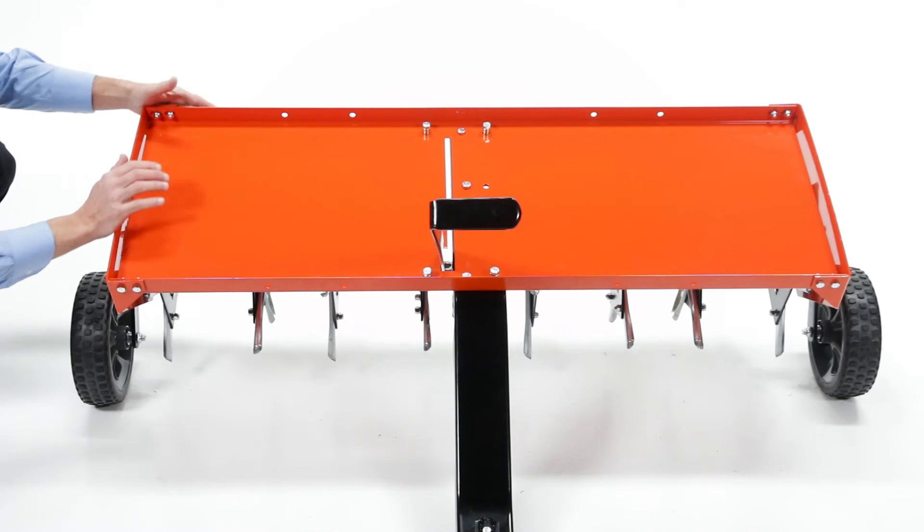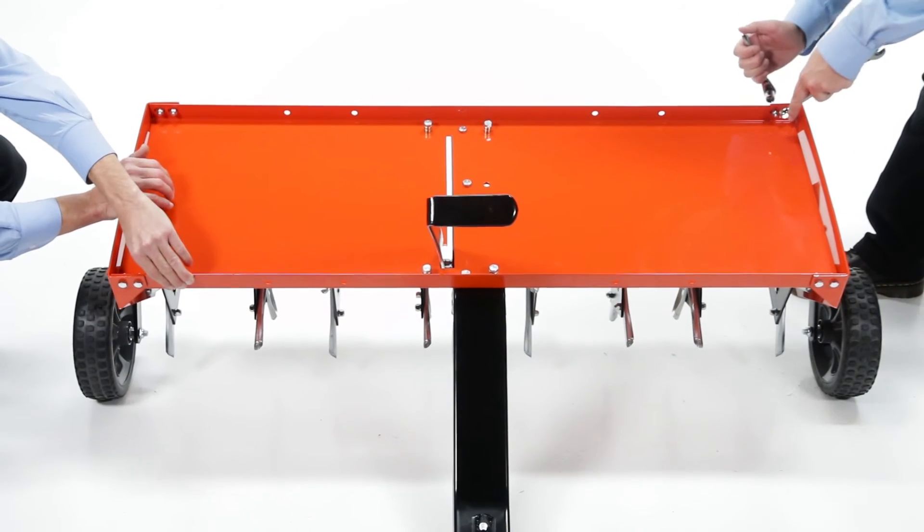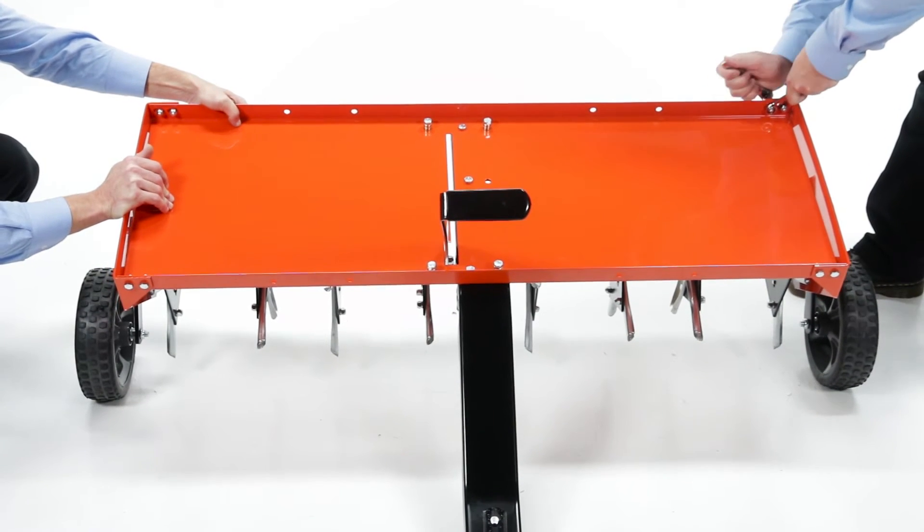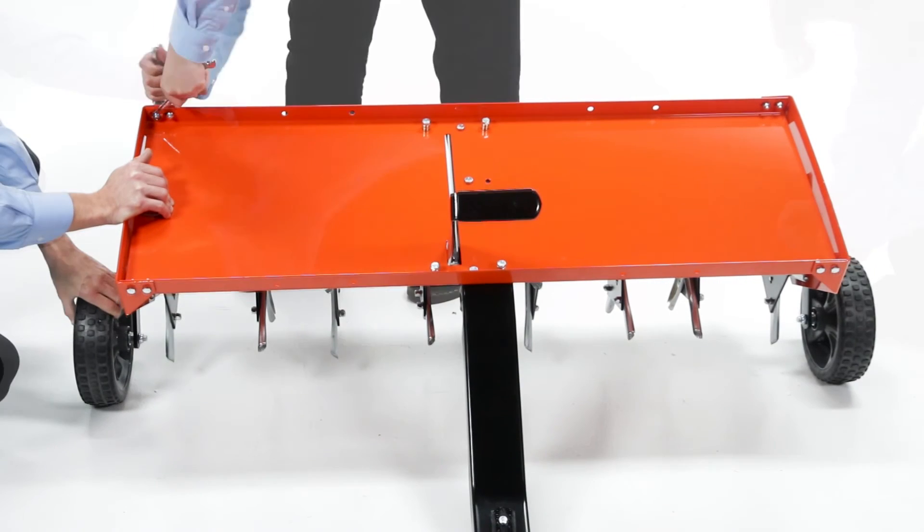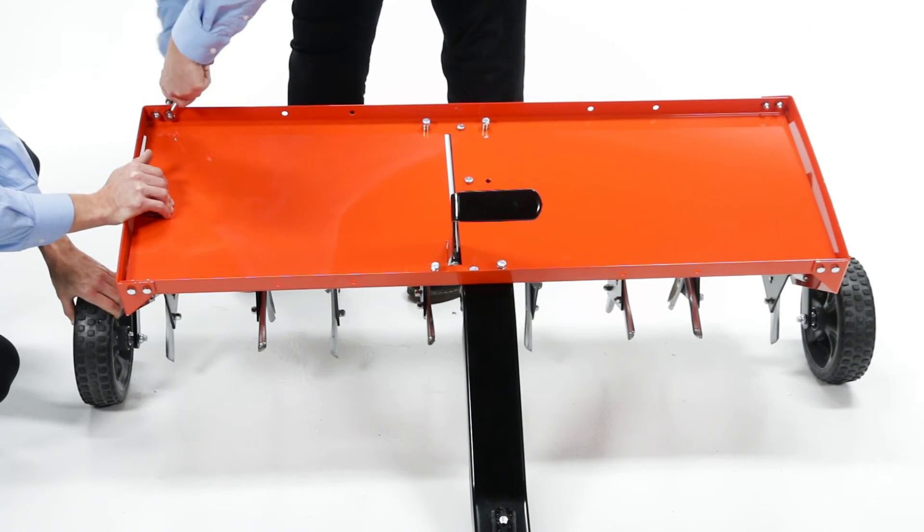Next, stand on the right side of the aerator, push against the tray which will force the lift handle over to the right side of the notch. Now, keep the tray and lift handle in this alignment and tighten the 8 bolts at the corners of the tray.